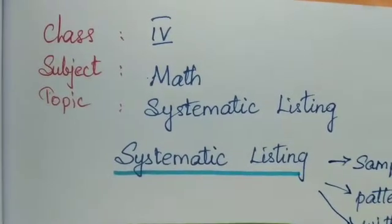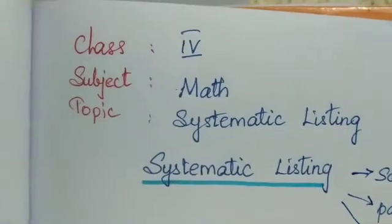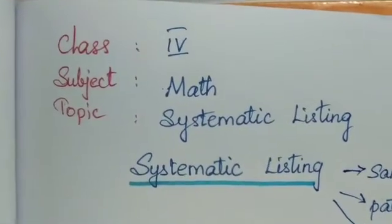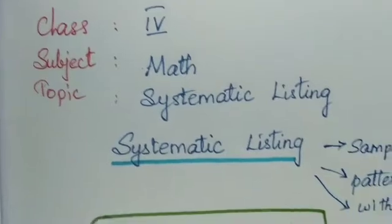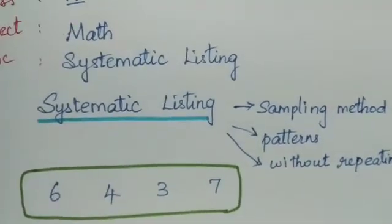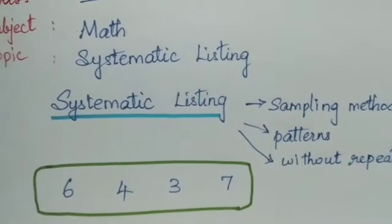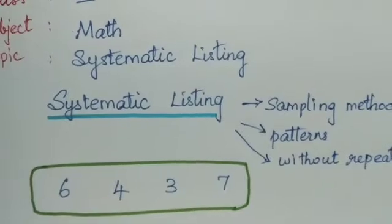Assalamu alaikum warahmatullahi wabarakatuhu. Good morning students. So now we are going to learn about systematic listing. Systematic listing is a sampling method where we can make samples out of anything. That is, we can make a pattern without repeating the same thing.